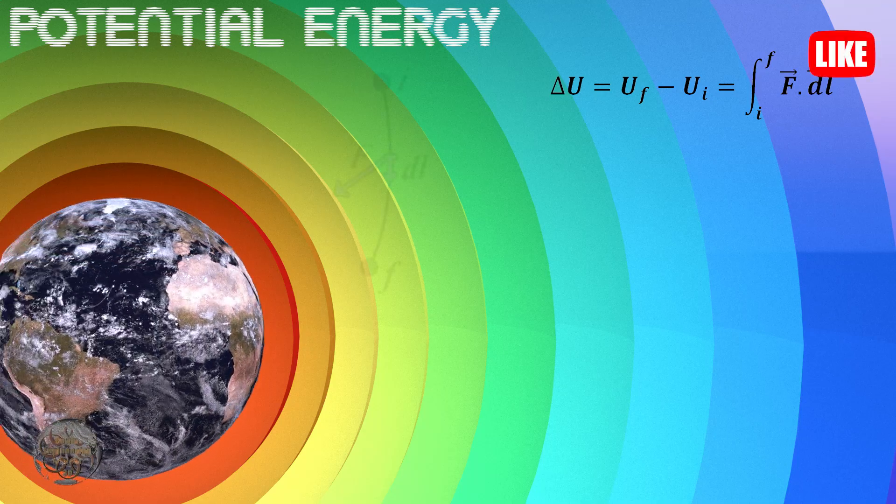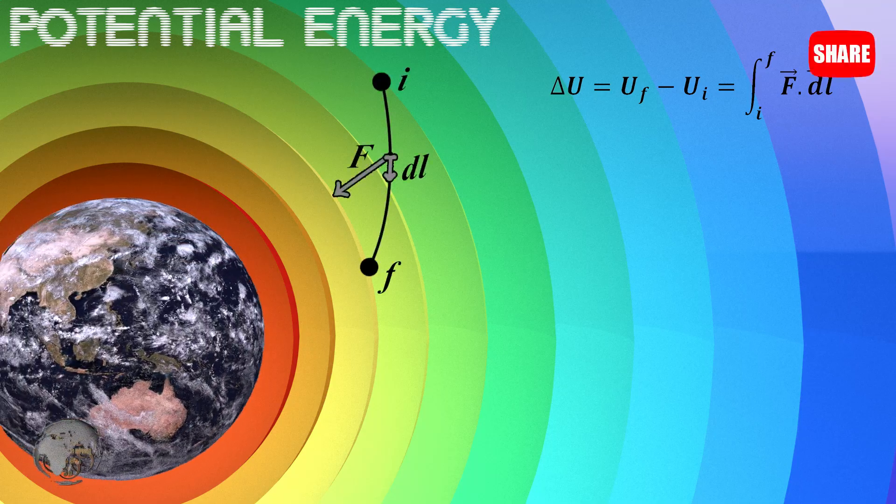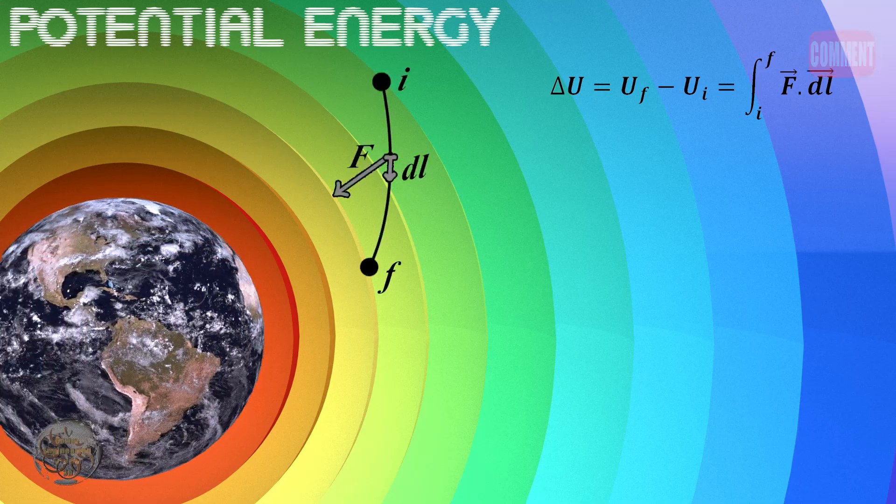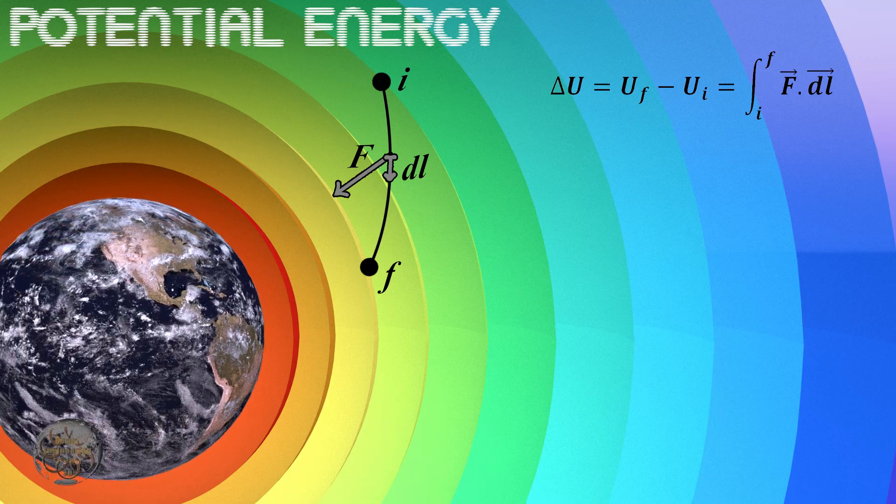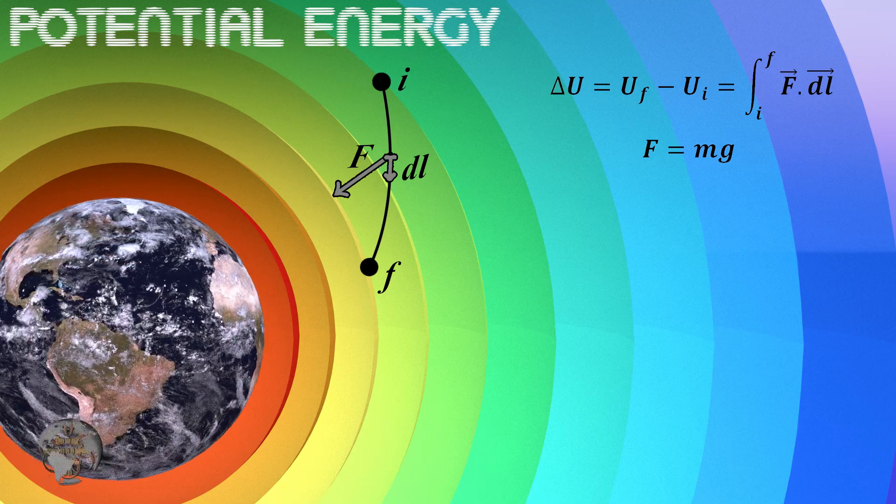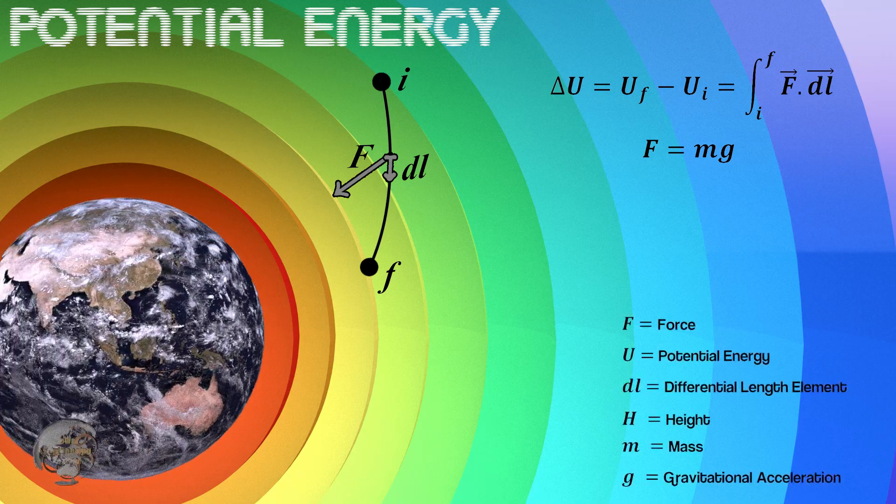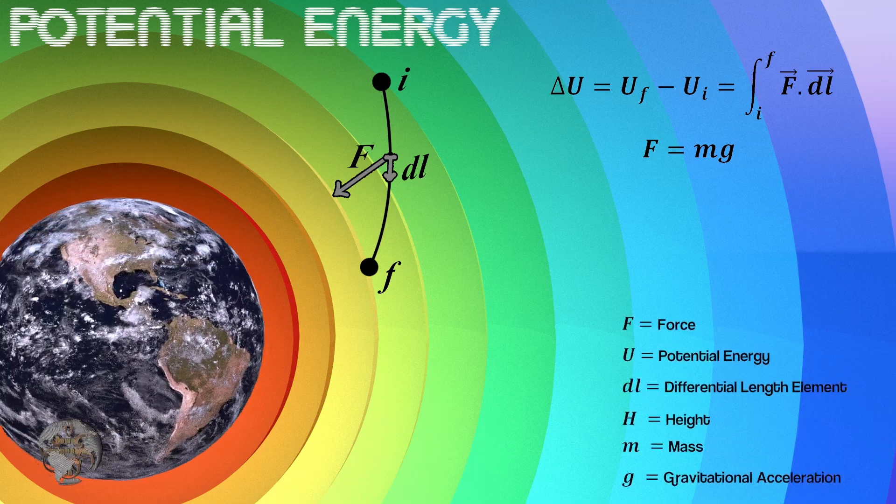This involves integrating the force vector over the differential length element DL from point I to point F. The force on an object is equal to its weight. This formula depends on the object's mass, gravitational acceleration, and height.